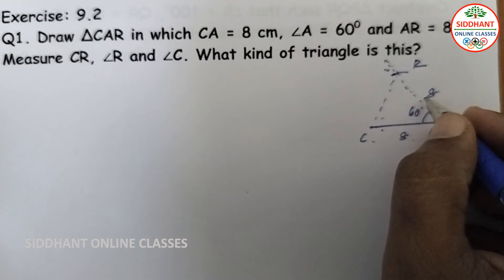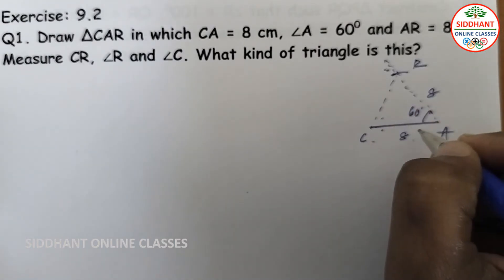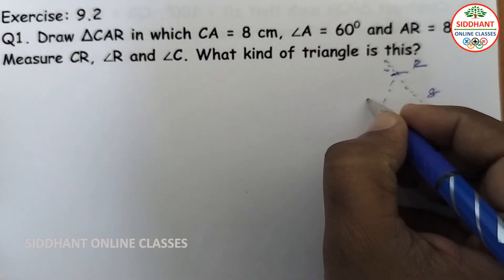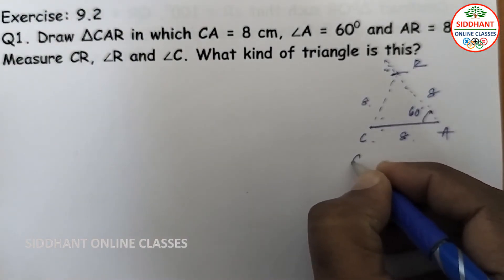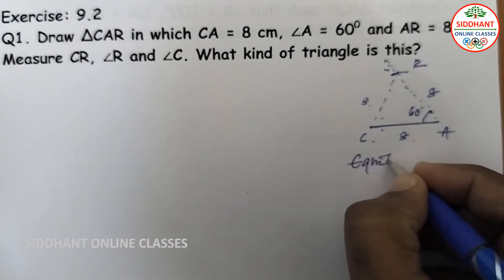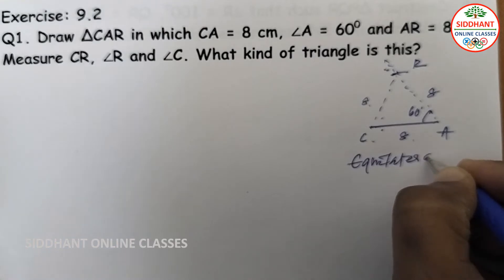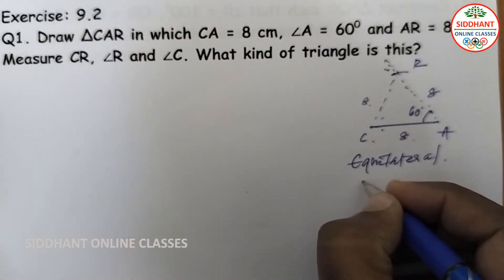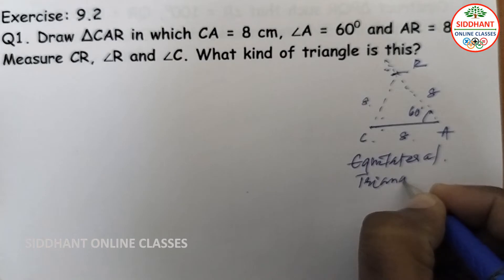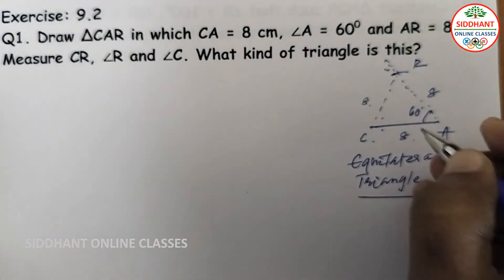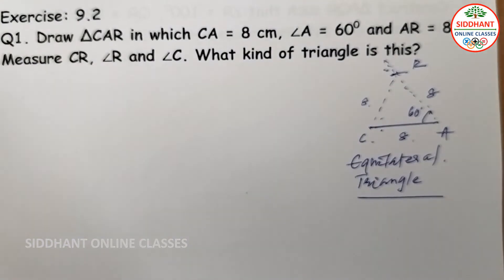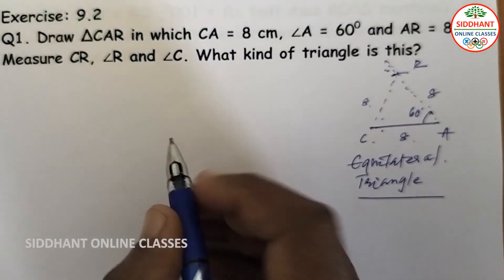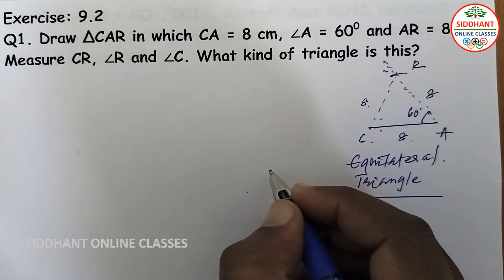So the sides are equal — three sides are equal — so this will also become 8 cm. This type of triangle we call it an Equilateral Triangle. All sides are equal here. So let's construct this triangle.